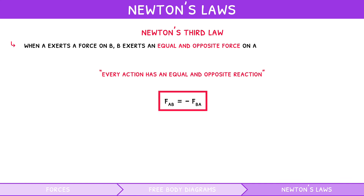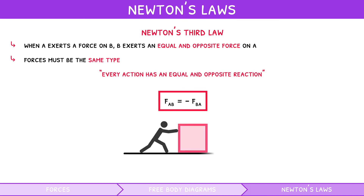However, an important requirement for this law is that the forces must be the same type of force. For example, when pushing the box, the pushing force exerted acts rightwards, whereas the pushing force of the box on the person acts leftwards. At the same time, a solid friction of the ground on the box acts leftwards, and a solid friction of the box on the ground acts rightwards.